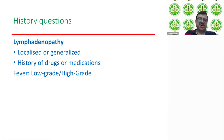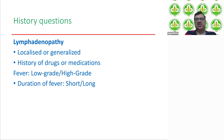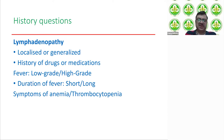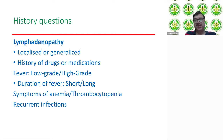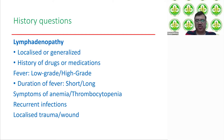Fever is a very important symptom. Short duration high-grade fever suggests infectious causes like infectious mononucleosis. Long duration fever suggests tuberculosis. Low-grade fever can also be present in autoimmune disorders like SLE. Additional symptoms of anemia and thrombocytopenia along with lymphadenopathy suggest a lymphoproliferative disorder or hematological malignancy. Recurrent infections with lymphadenopathy may indicate autoimmune or immunodeficiency disorders. In localized lymphadenopathy, consider local wound or trauma, especially in a diabetic patient.